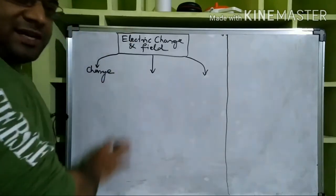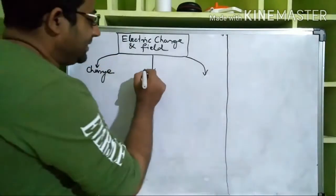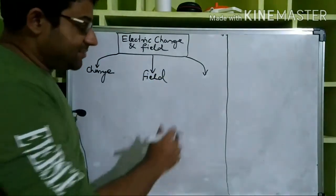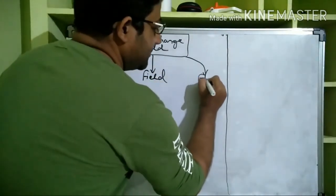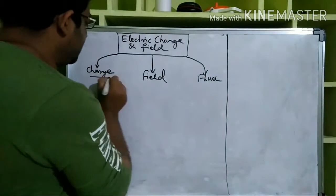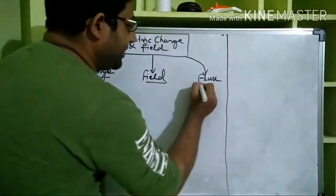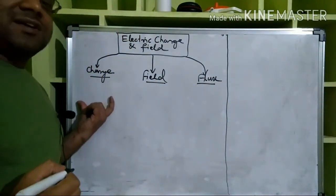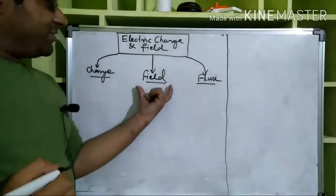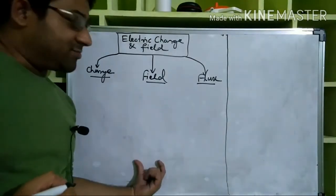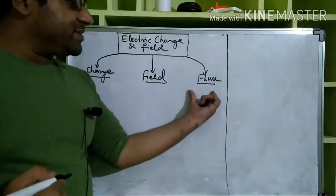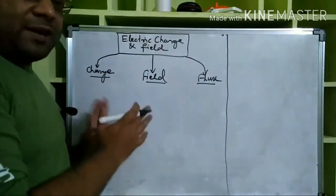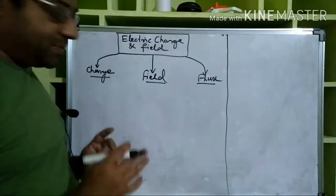For Electric Charge and Field, we basically studied three things: charge-related topics, field-related topics, and electric flux. These three are the main branches. Under each — charge, field, and flux — many things were studied, and all of them will be placed on one paper. That is the goal of the memory map.